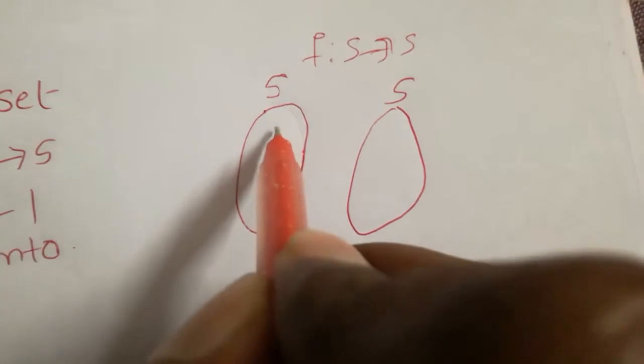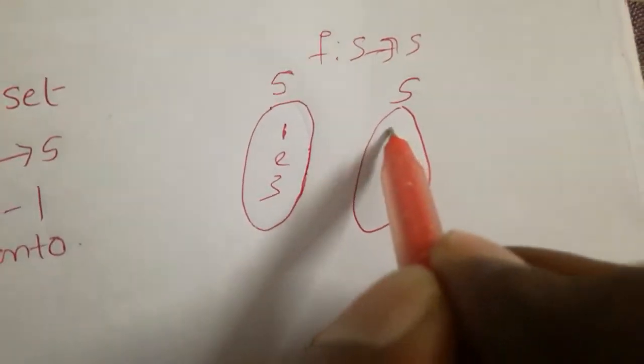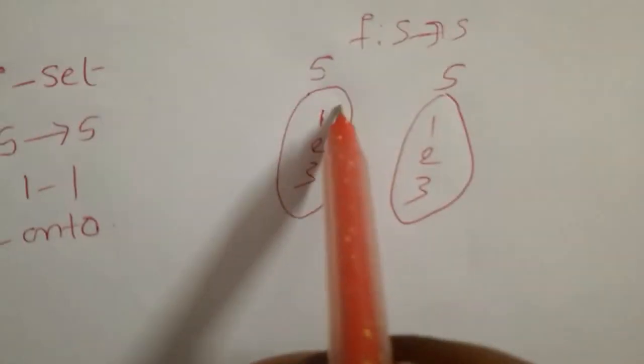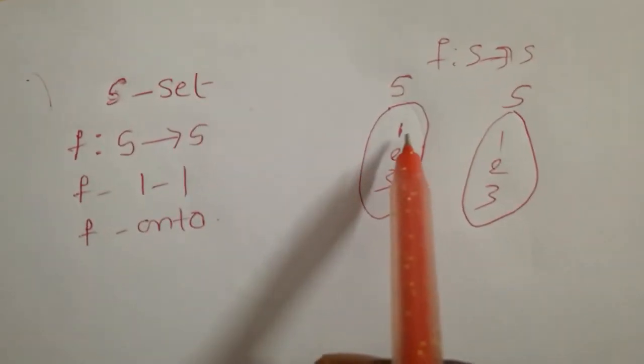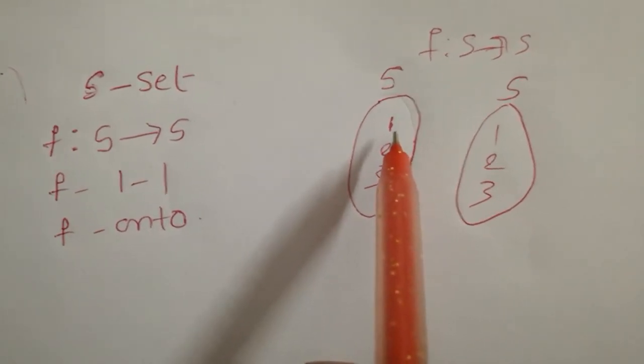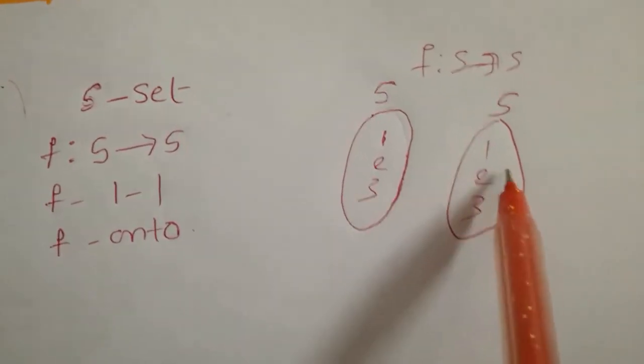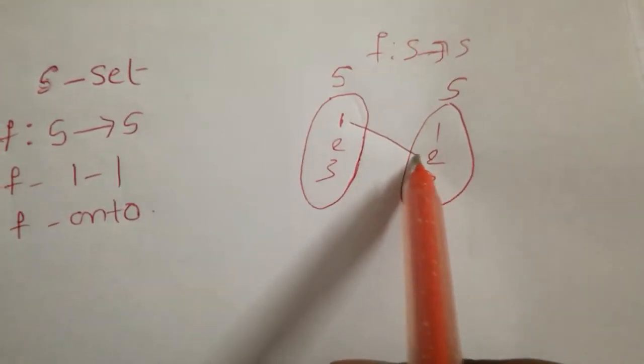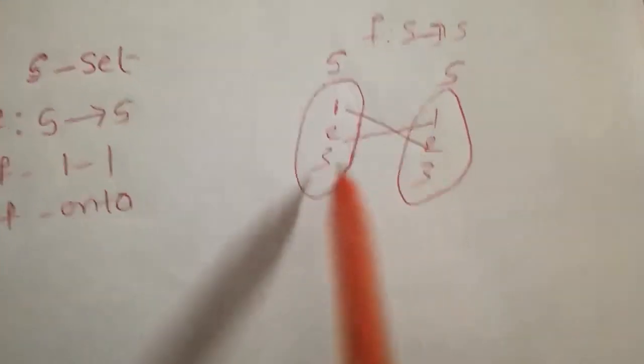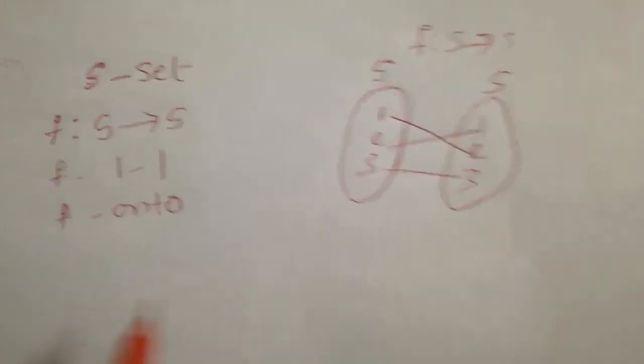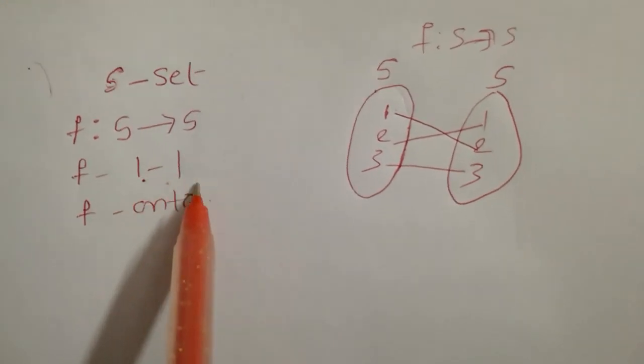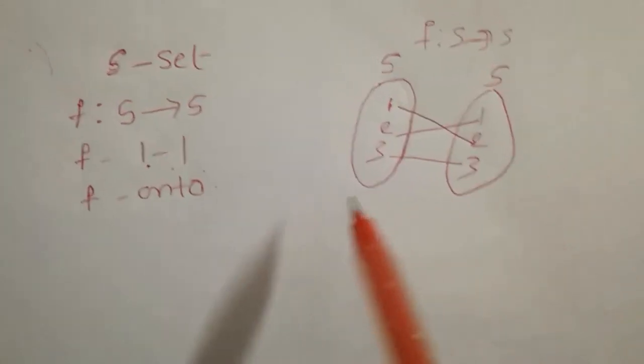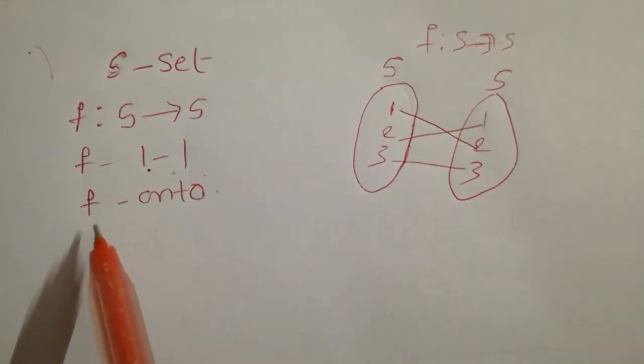Here you can take 1, 2, 3. So first of all, f is 1-1, that means each element of S, every element of S, is mapped to a single element of S. For example, I am taking like this: 1→2, 2→1, 3→3, and f has to be onto.